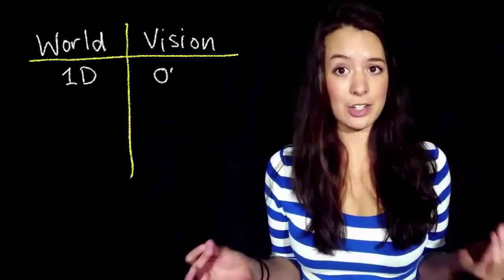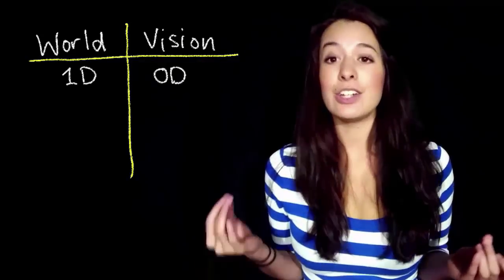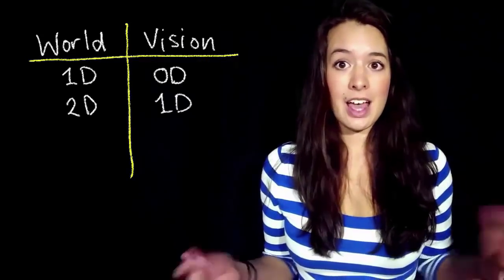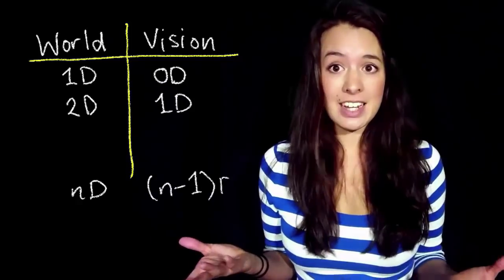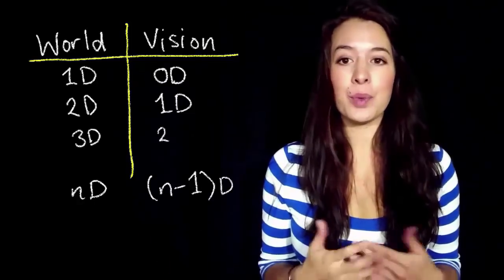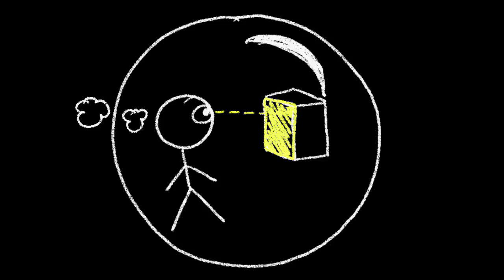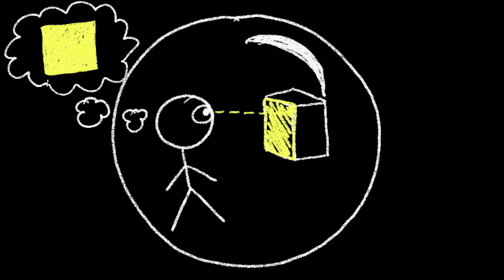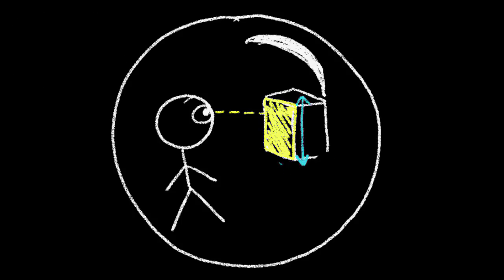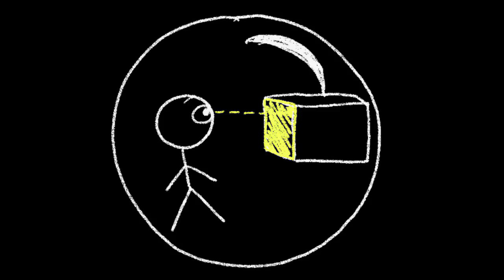In a 1D world, they see in 0D. In a 2D world, they see in 1D. Are you starting to see a pattern? It follows that in a 3D world, we see in 2D. Imagine you in our 3D world and you see a cube in front of you. From your perspective, you are seeing only a two dimensional square — the face of the cube. You can see the length and width, but not the depth. This could be a rectangular prism and you wouldn't know.